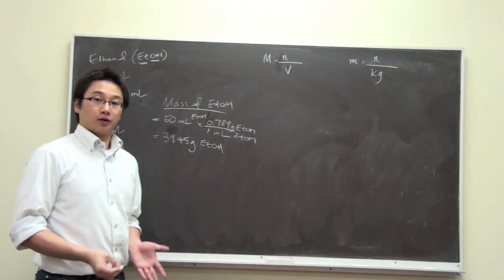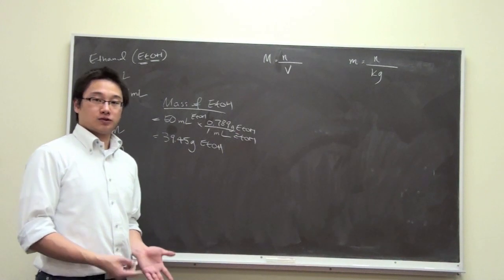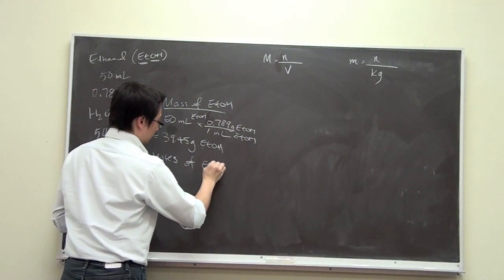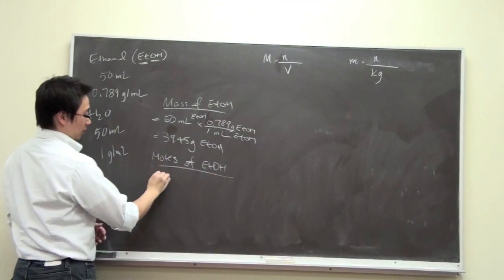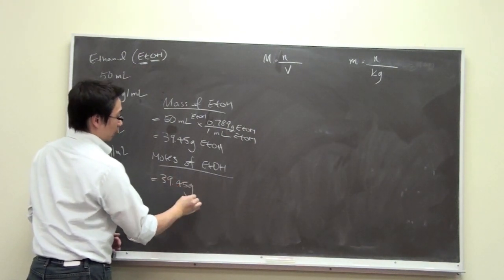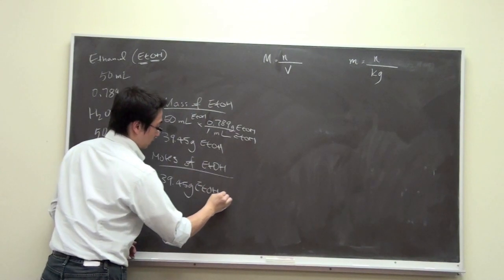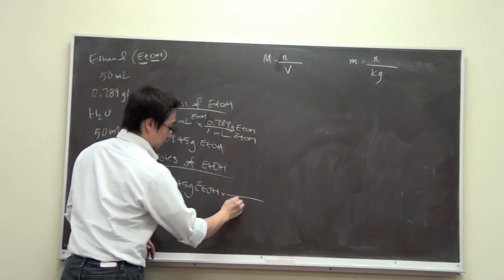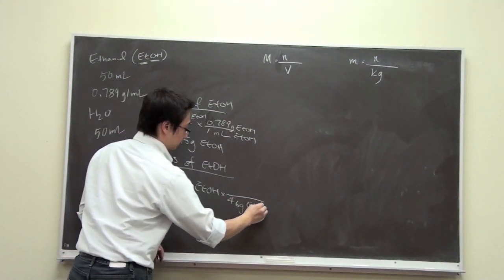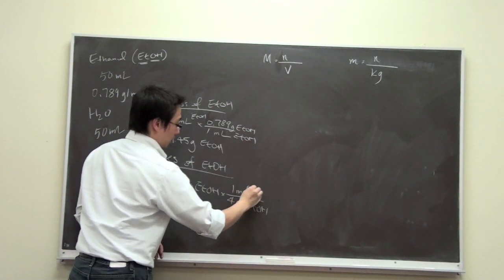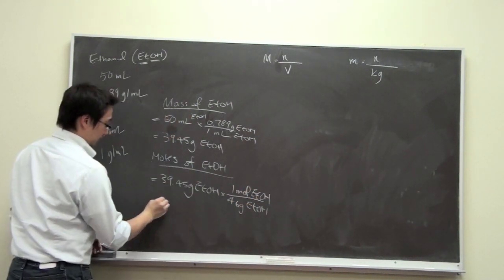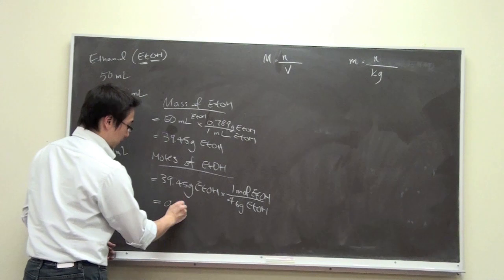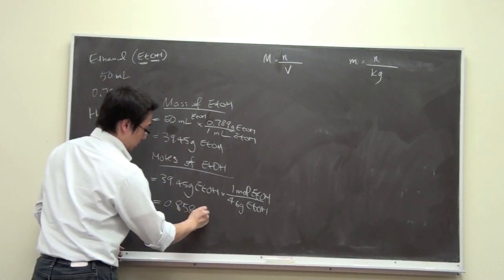Now we have the grams, the mass, and then we can simply use the molar mass to find out the number of moles of the ethanol. So we have 39.45 grams of ethanol. The molar mass of ethanol is 46 grams per mole if you calculate that. So 46 grams of ethanol is to 1 mole of ethanol. If you use your calculator, you will find out that the number of moles will be 0.858 moles of ethanol.